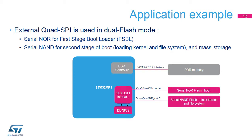The Quad SPI interface of the STM32 MP1 microprocessors is one of the supported boot sources. It can be used in a dual-quad configuration where one port is connected to a serial NOR flash memory for the initial steps of the boot sequence, and the second port is connected to a serial NAND flash memory which embeds the Linux kernel and the file system, and hence can be used as mass storage by the application. Because of the high speed supported by the interface and the very low pin count, such a setup offers a highly optimized system integration and cost-efficient solution.